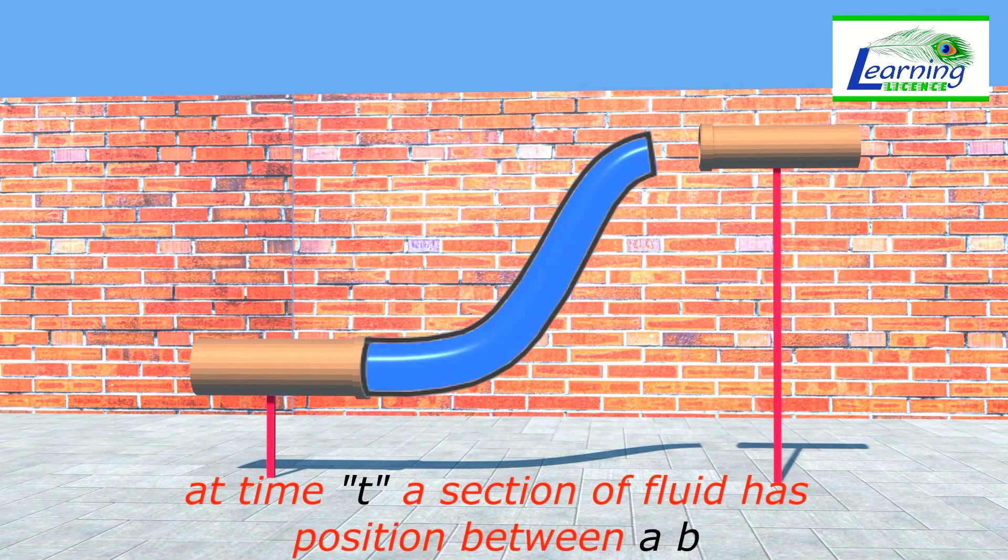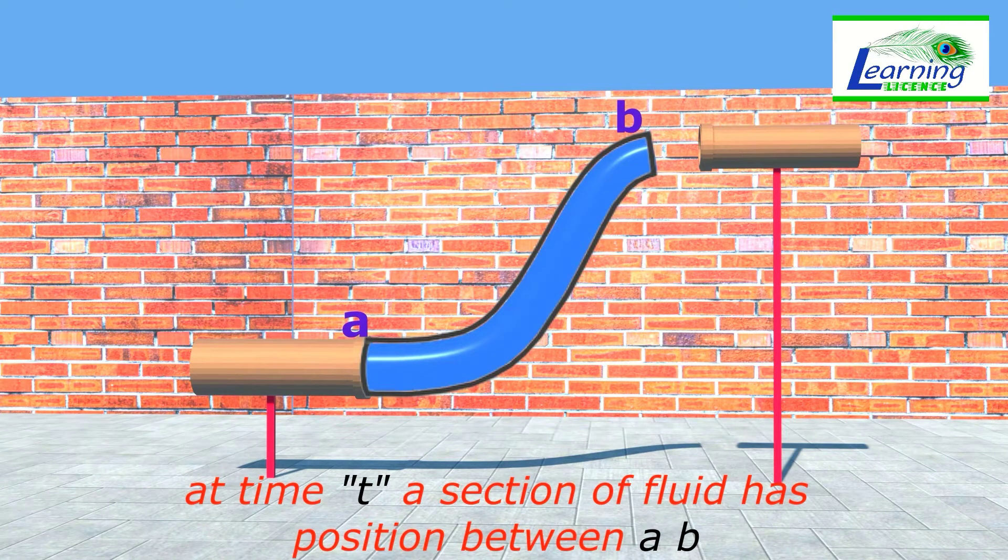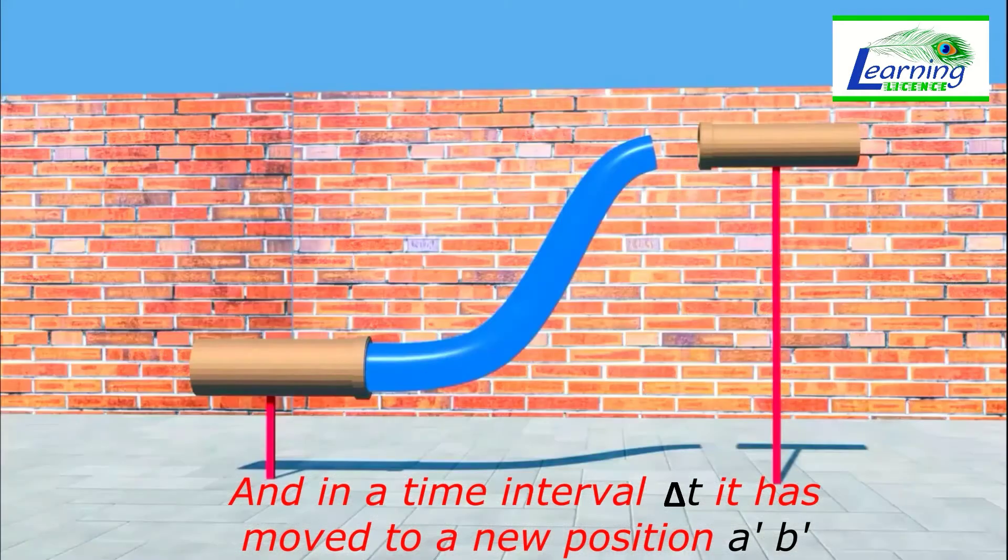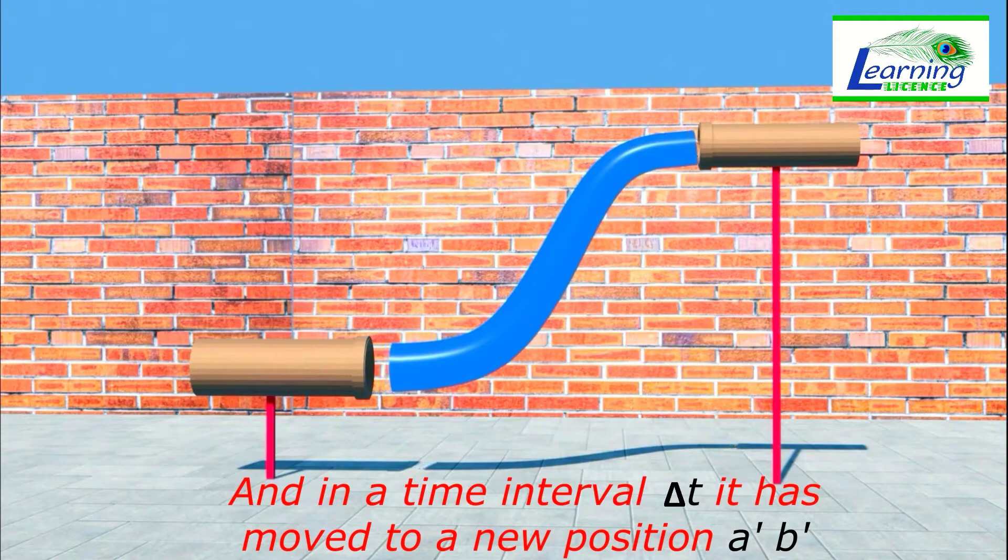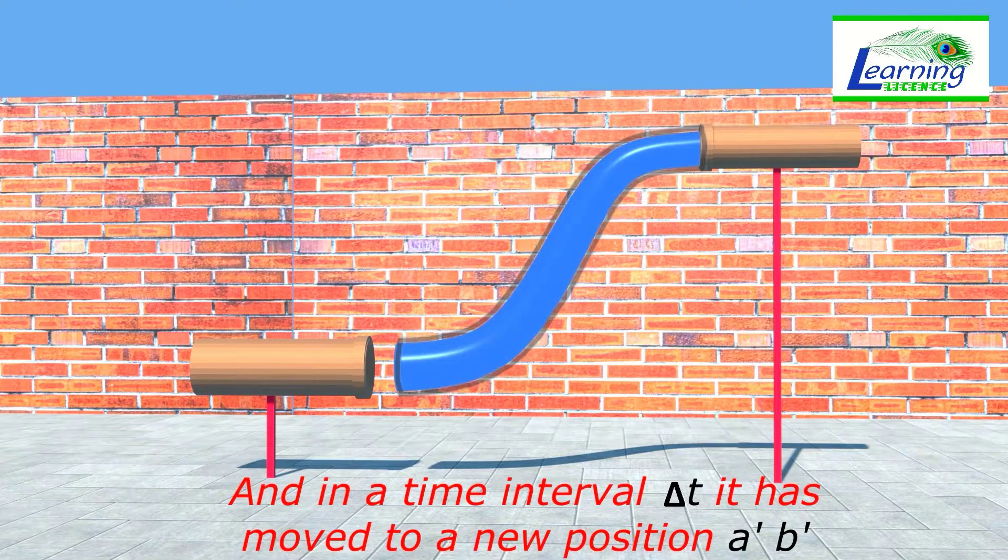At a certain time T, a section of fluid has a position between A and B. And in a small amount of time interval del T, this section has moved forward to a new position A dash and B dash.